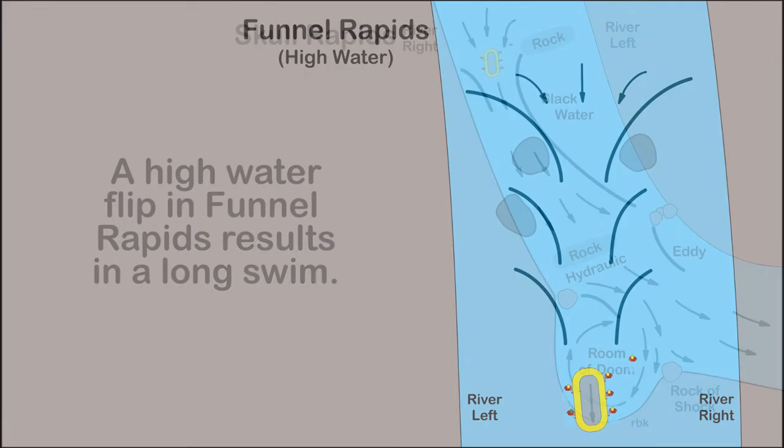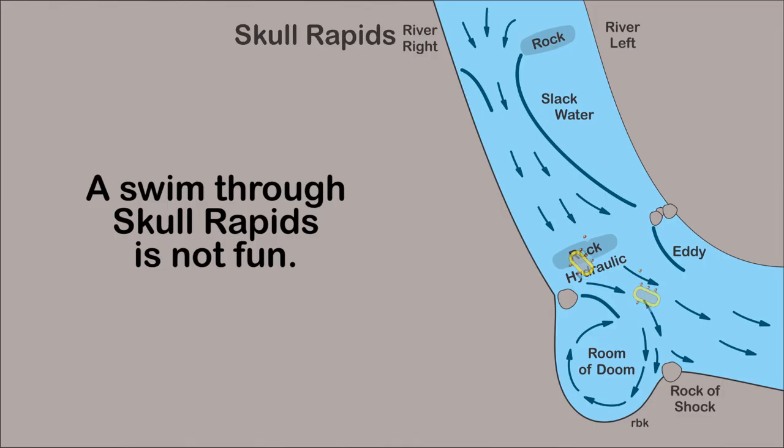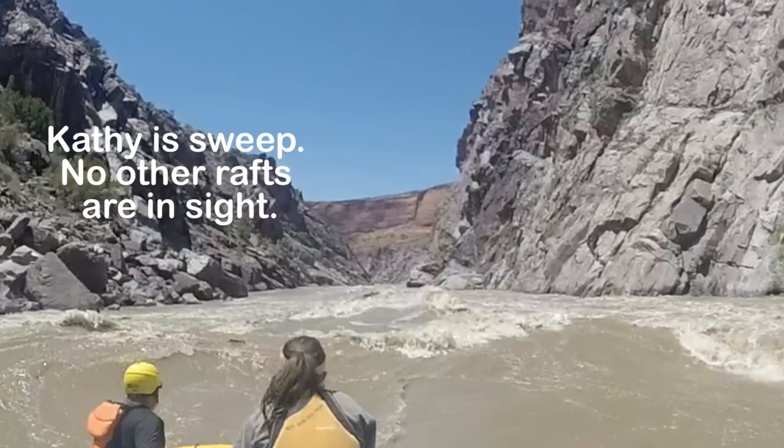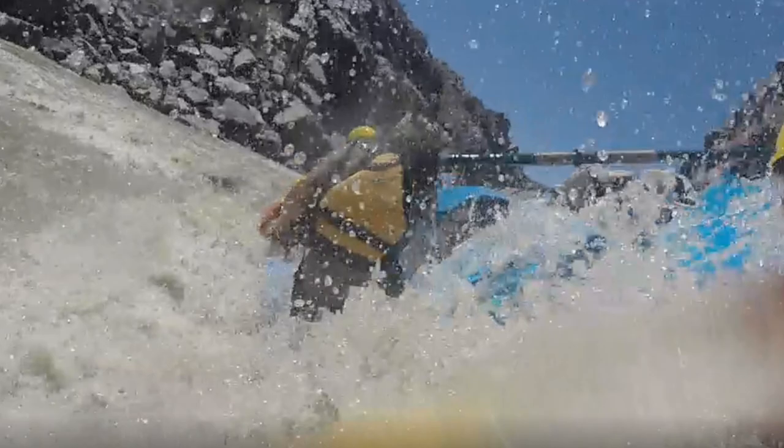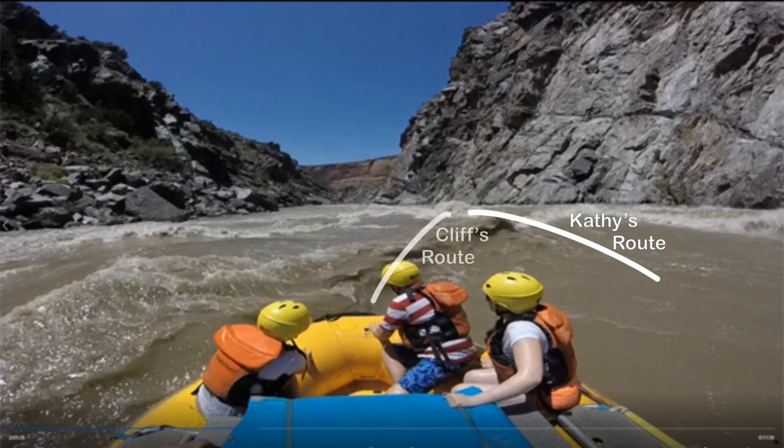This is exactly what happened to Kathy's raft. The group was spread out through the canyon. Kathy ran Funnel Rapids head-on, and the diagonal breaking wave flipped her raft. Cliff's route was 20 to 30 feet to the left of her route and avoided the diagonal wave. The breaking wave could be avoided altogether.